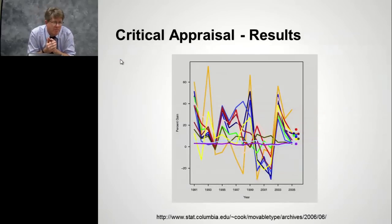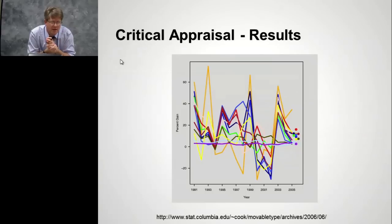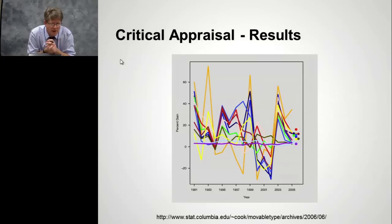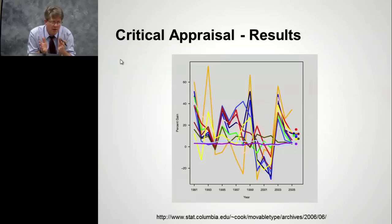Similarly, you want to be able to spot bad graphs — this is an example of a bad graph. There may be useful information, and you'll see plenty of examples of graphs like these in the medical literature where it's just really hard to figure out what the authors are trying to talk about. So you want to be able to identify graphs that you frankly shouldn't waste your time on trying to figure out. Ideally, journal editors will catch these and try to make them easier to read, but some of them can be confusing even when well-done.